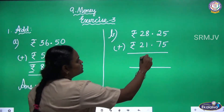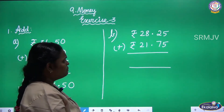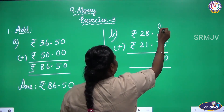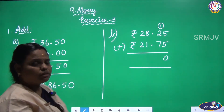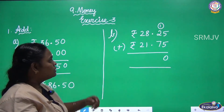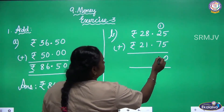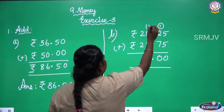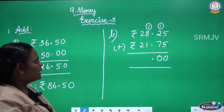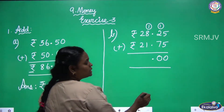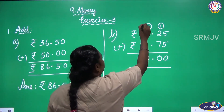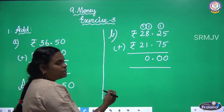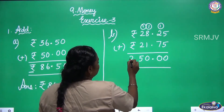What is 5 plus 5? 5 plus 5 is 10. Write 0, then 1 carry over. Then 2 plus 1 is 3, 3 plus 7 is 10 — write 0. Then put the dot. 1 carry over, so 8 plus 1 is 9, 9 plus 1 is 10 — write 0, 1 carry over. Next 2 plus 1 is 3, 3 plus 2 is 5. Now you tell me the answer.